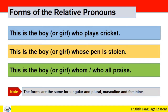Note: The forms are the same for singular and plural, masculine and feminine. یہاں دیکھا گیا کہ who, whose, اور whom — یہ forms of relative pronouns برابر ہیں singular plural کے لیے اور masculine feminine کے لیے۔ کوئی امتیاز، کوئی فرق نہیں ہے۔